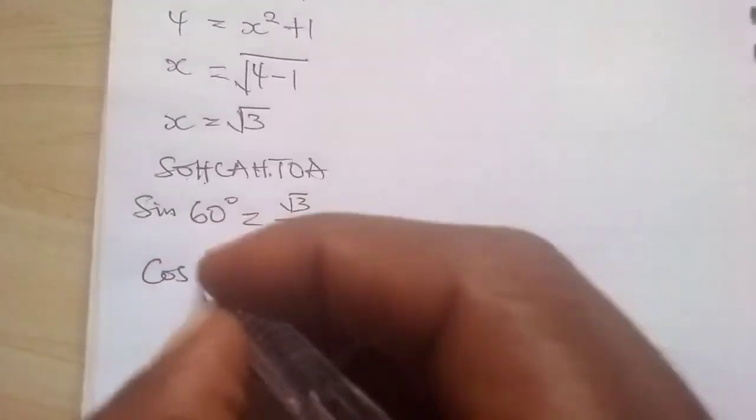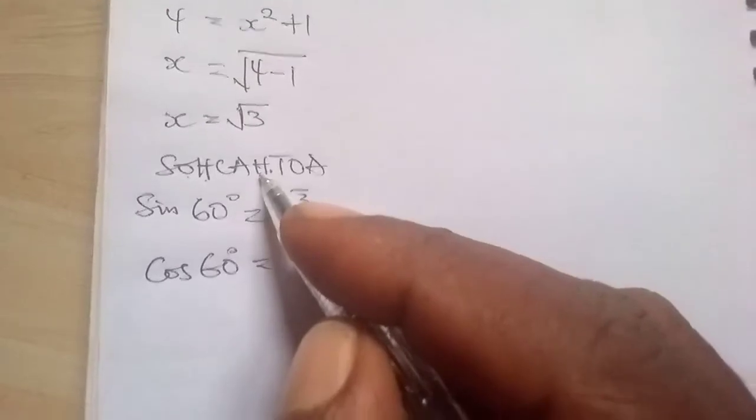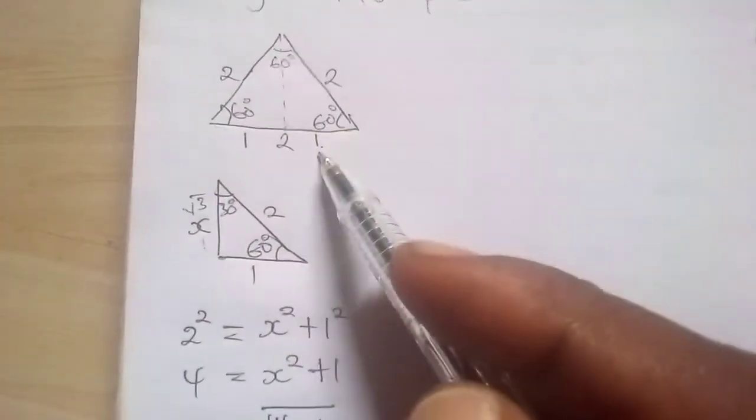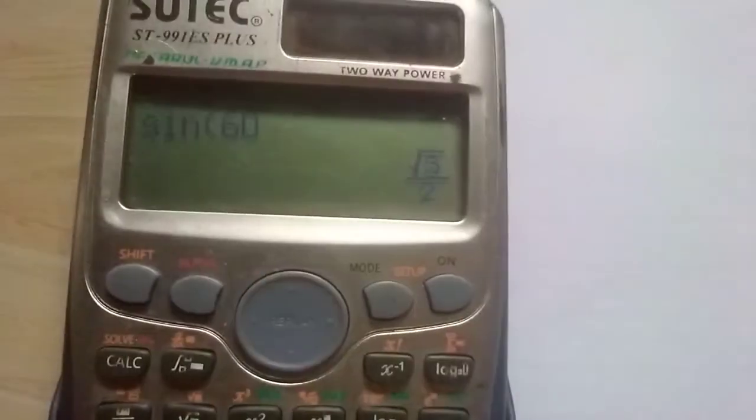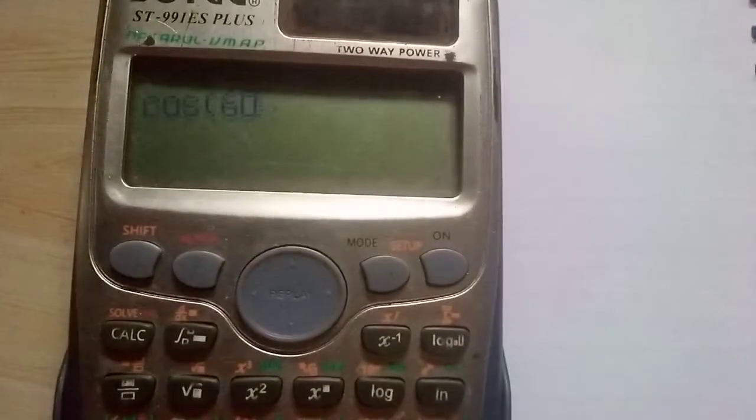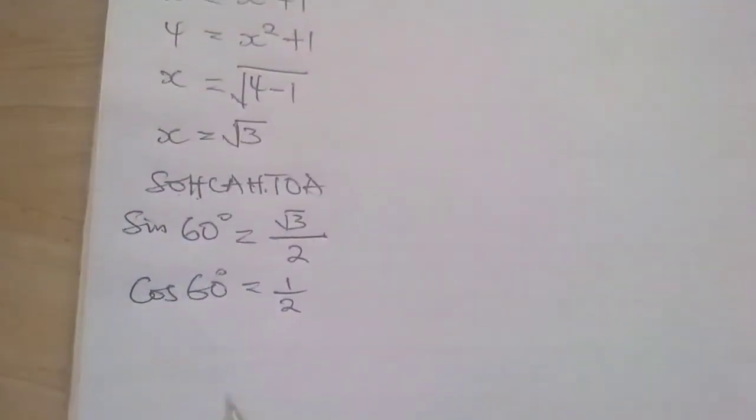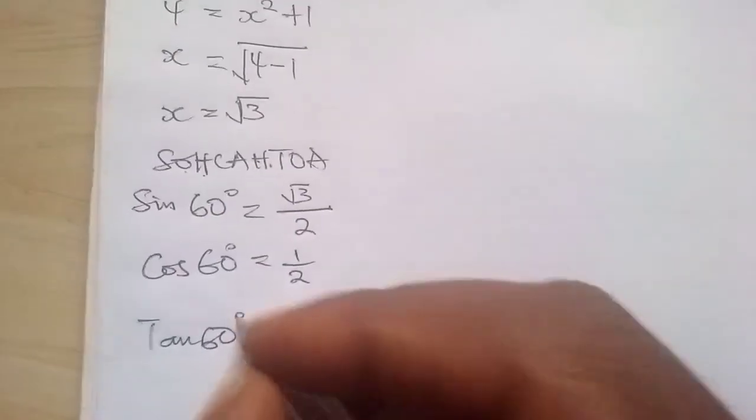If we say cos 60 degrees, cos means adjacent over hypotenuse. So cos 60 there, 60 adjacent is 1, which is 1 over 2. So if we confirm it using the calculator, cos 60 is equal to 1 over 2.